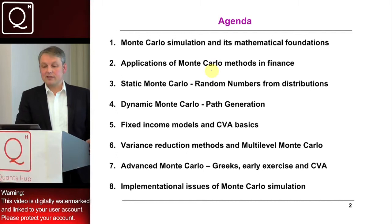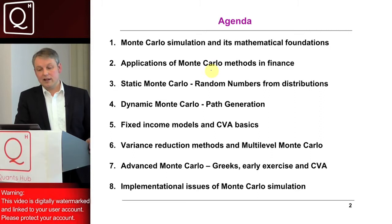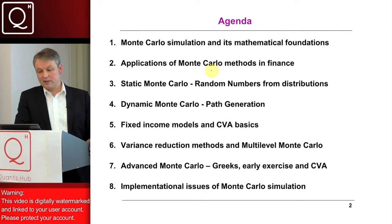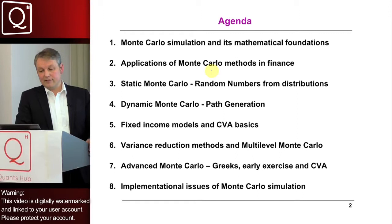We saw random number generators — pseudo and quasi-random numbers — and we were able to transform simple uniformly distributed random variables to variants from given distributions. Furthermore, we set up a framework for doing the time evolution of a system specified by some stochastic mechanism, which we call path generation, in one and in multi-dimensions.